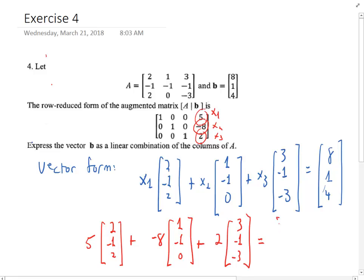And it's always good to check. All right, 2 times 5 is 10 minus 8 gives me 2 plus 2 times 3 is 6 gives me 8. Okay, minus 1 times 5 is minus 5 plus 8 gives me 3 minus 2 gives me 1, then 2 times 5 is 10 minus 0 is 10 minus 6 is 4. So these all work out and this is my answer right here.